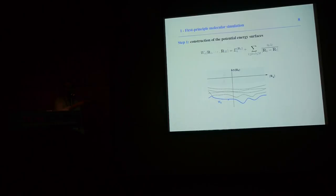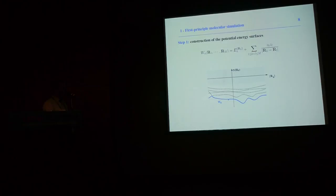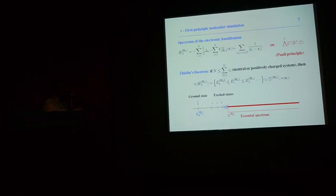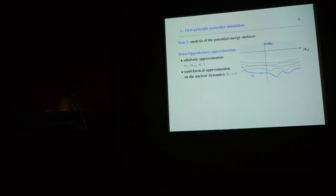We are now in a position to define the Born-Oppenheimer potential energy surfaces. We add to this eigenvalue the term missing in the electronic Hamiltonian — the interaction between nuclei — and obtain a sequence of increasing functions of the nuclear coordinates, called the Born-Oppenheimer potential energy surfaces. Of particular interest is the lowest one, which is the ground state potential energy surface. The lowest eigenvalue is called the ground state; the others are called excited states.